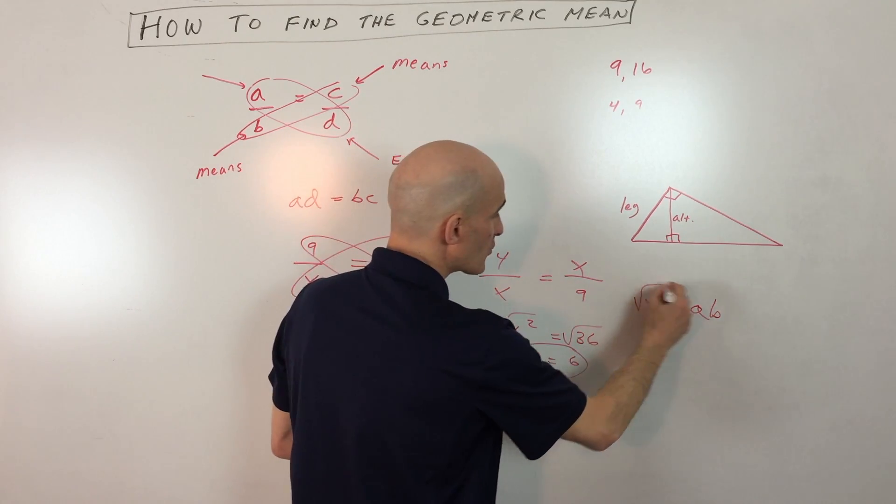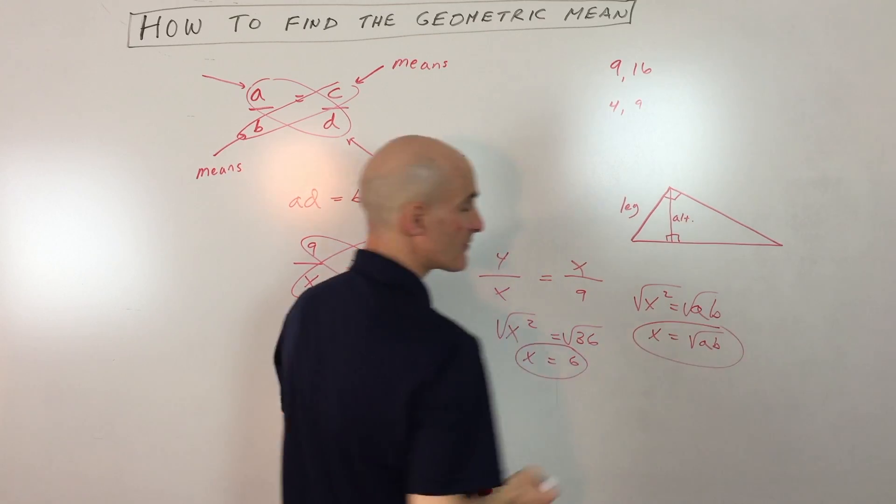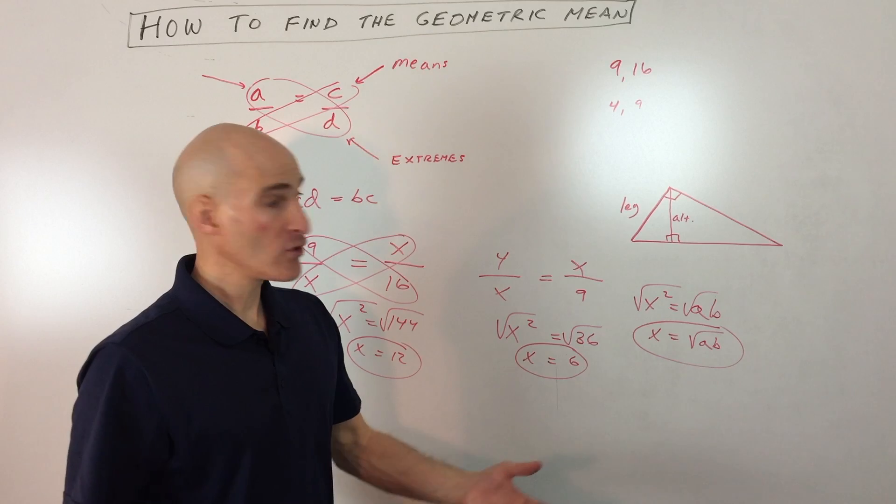And if we take the square root of both sides, you can see that X is equal to the square root of a times b, right? So if you want just a quick way of doing it, all you do is just multiply the two numbers together, take the square root, and that's your geometric mean.